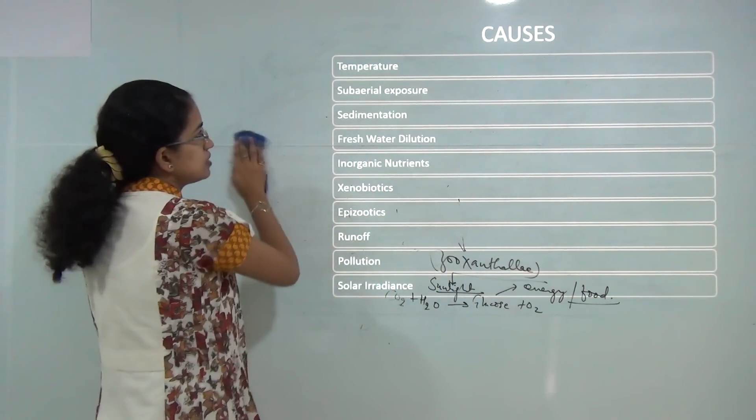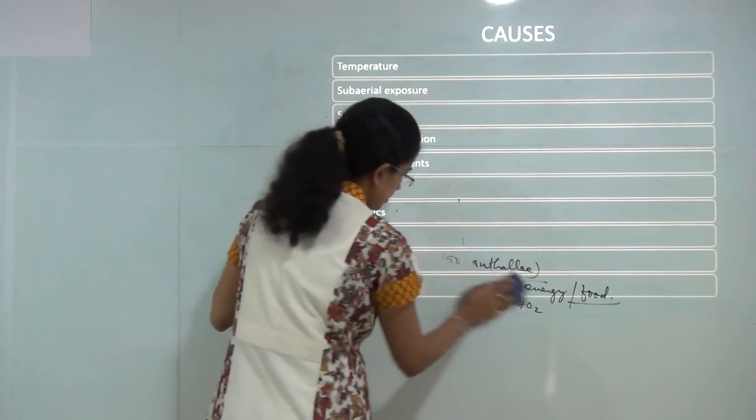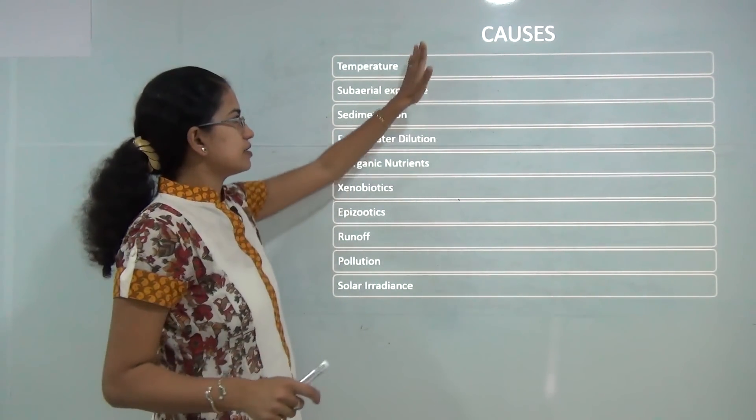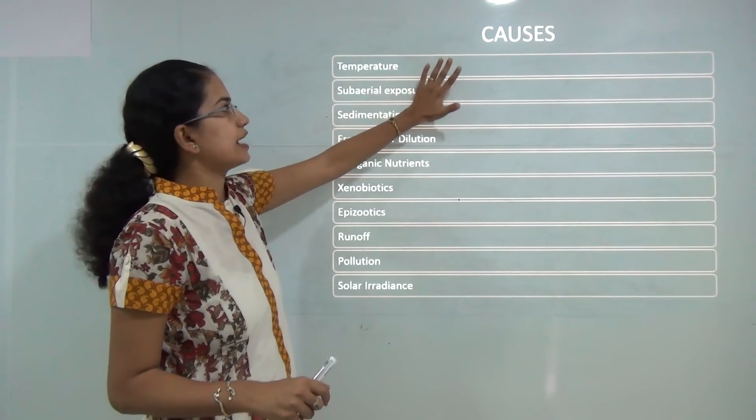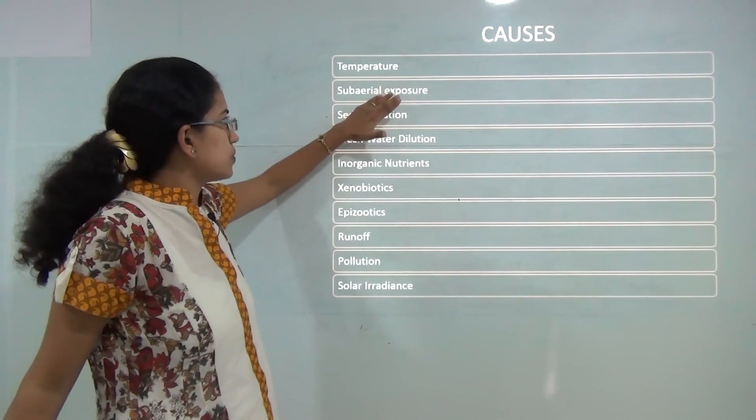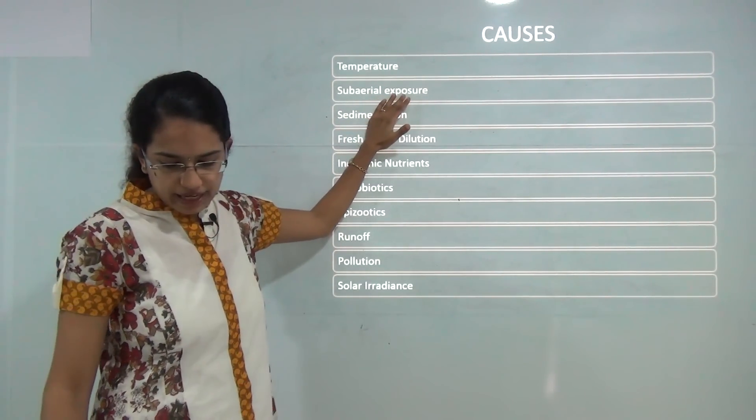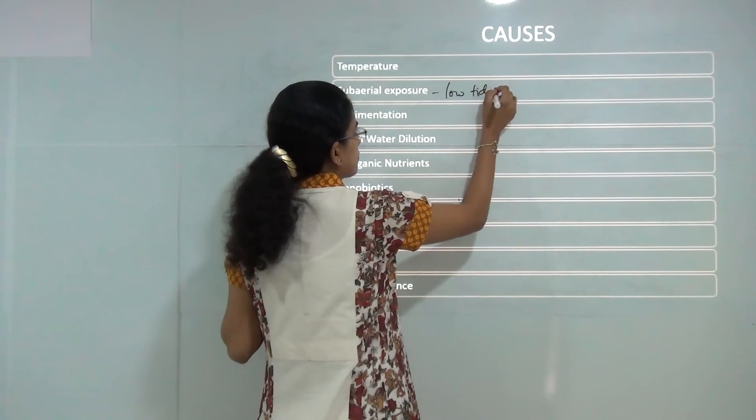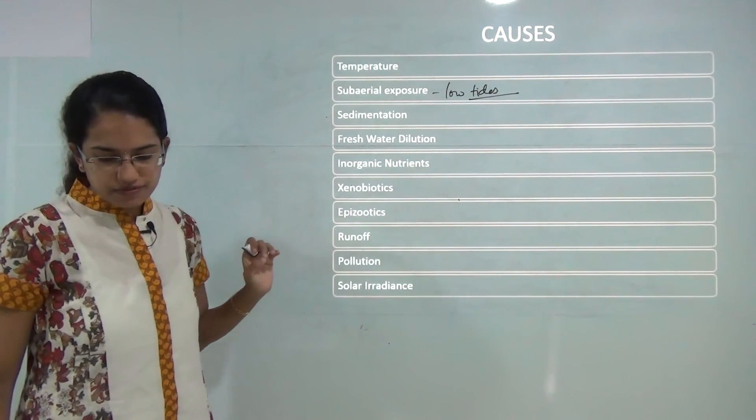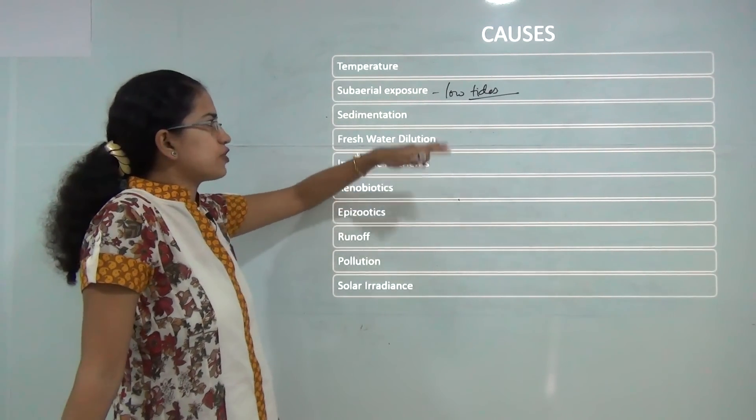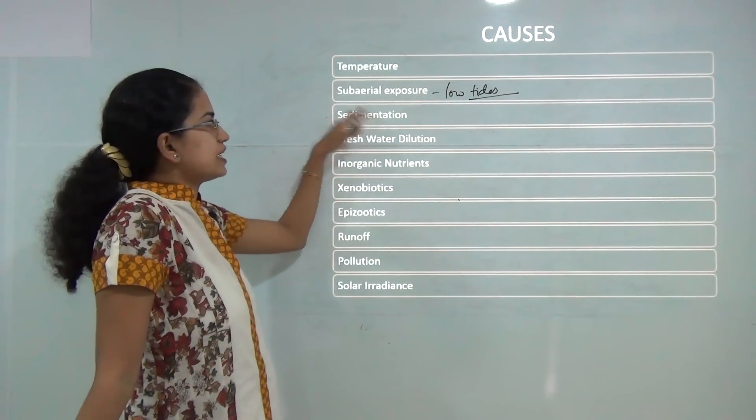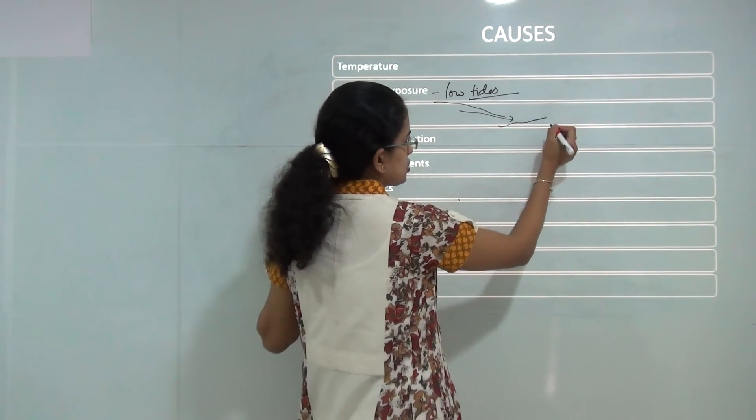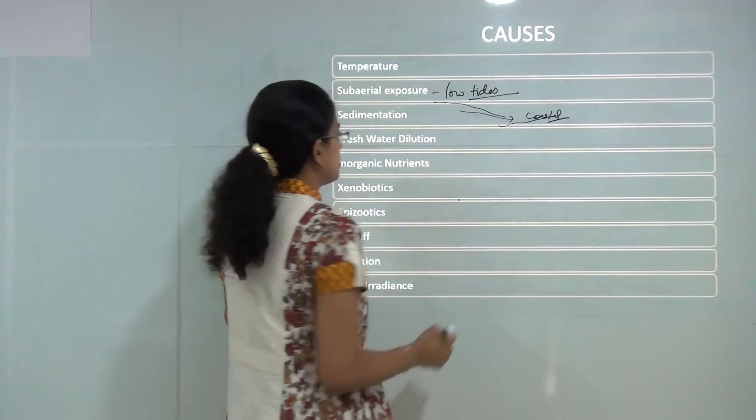There are few important causes that we need to understand today. First is the temperature. As I said if the temperature range varies if it becomes too cold or too hot the algae would come under stress and it might lead to bleaching of the coral or death of the coral. Then you have the sub-aerial exposure that is presence of low tides and that would affect the growth of the coral reefs. You have a kind of drop in the sea level as well. If there is lot of sedimentation coming from the coast it would accumulate in the coastal areas and it will again affect the coral population.